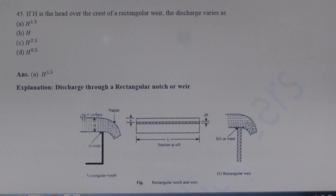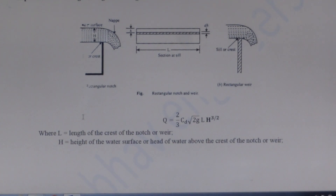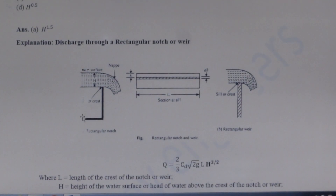Next question: If H is the head over the crest of a rectangular weir, the discharge formula for a rectangular weir is Q = (2/3)·Cd·√(2g)·L·H^(3/2). Therefore, the discharge Q is proportional to H^1.5. For a triangular weir, the discharge is proportional to H^2.5.